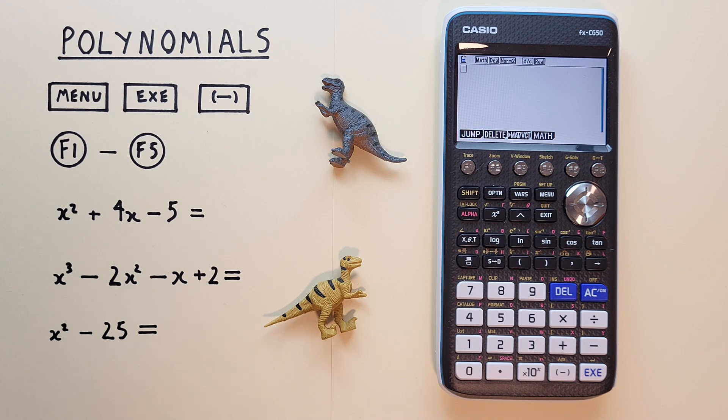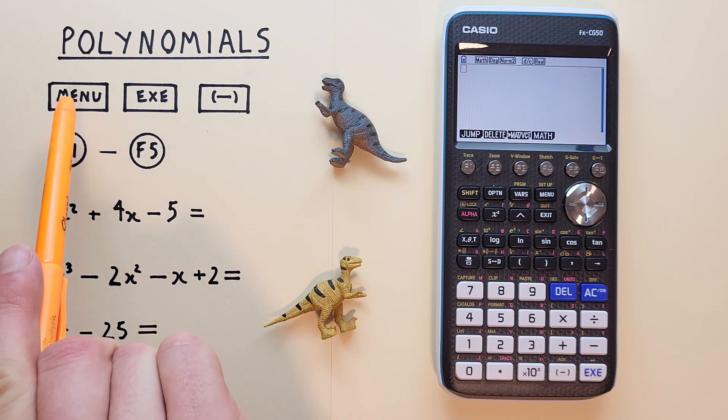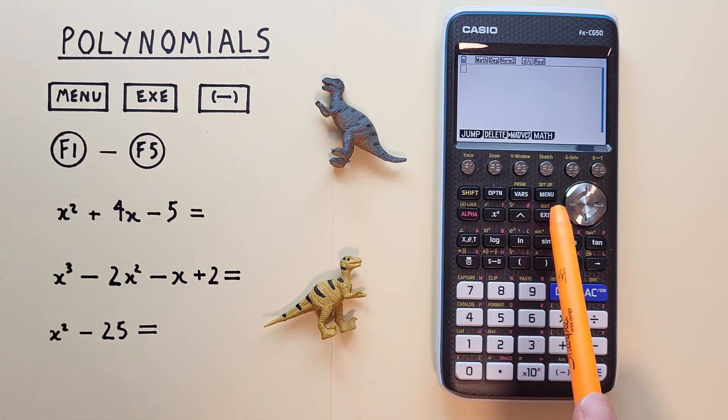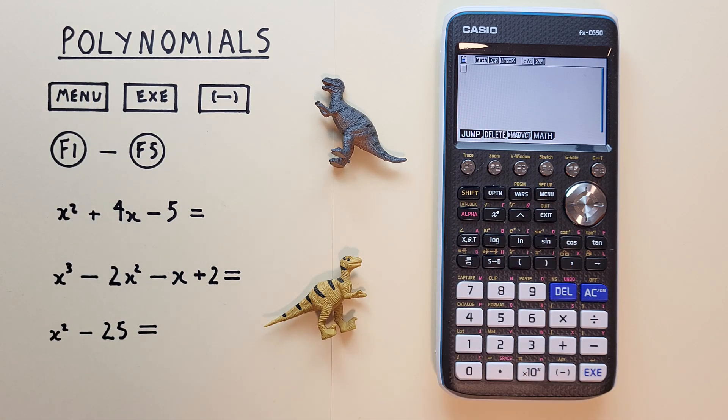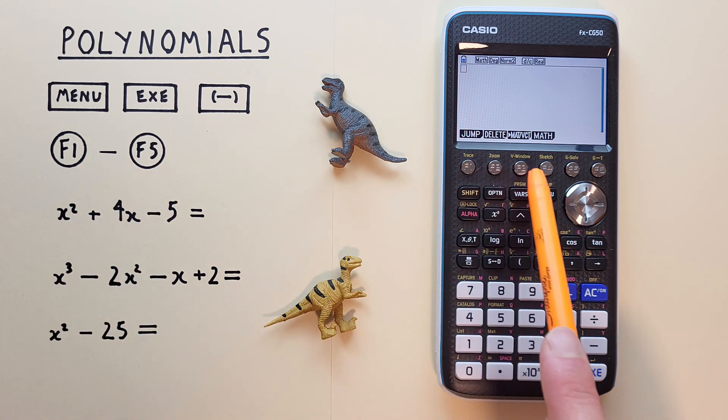To do this, we'll use the menu key that looks like this, located here, the exe or execute key that looks like this, located here, the negative key that looks like this, located here, and the f1 through f5 keys that look like this, located here.